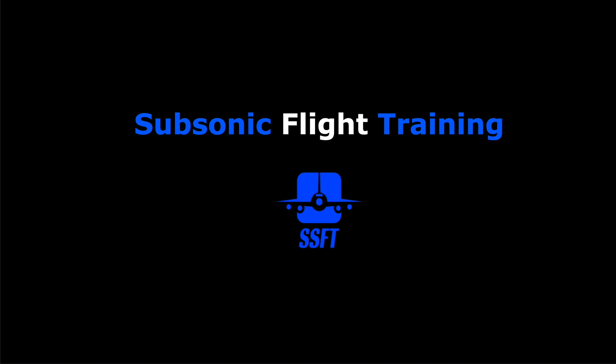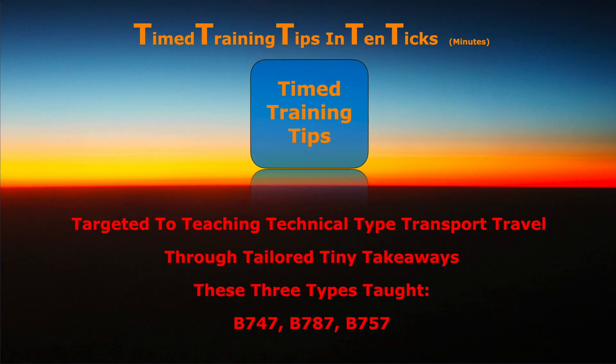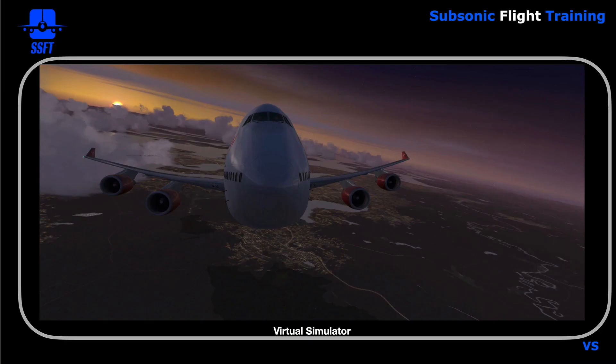Hi everybody, Captain Al speaking with your time training tips and ten ticks targeted to teaching technical type transport travel through tailored tiny takeaways. The question for today, episode 4, part 3: What does a non-normal procedure look like on the electronic checklist or ECL? Today we get airborne on the Boeing 747-8. Let's go to the virtual simulator and take a look.